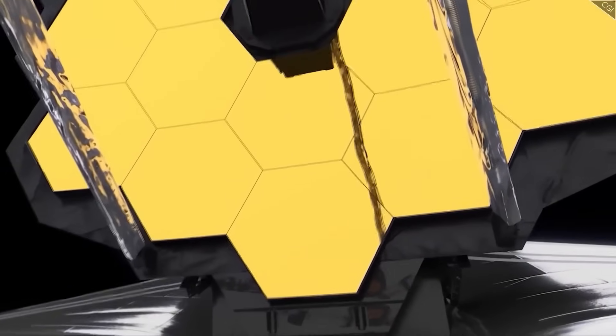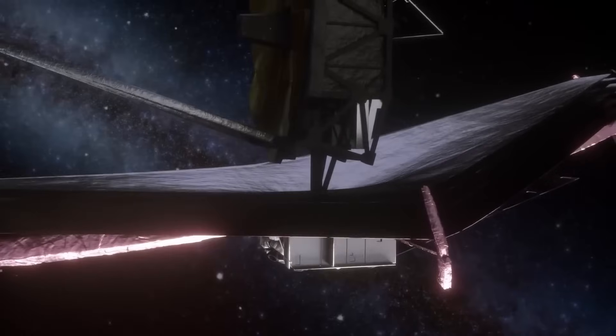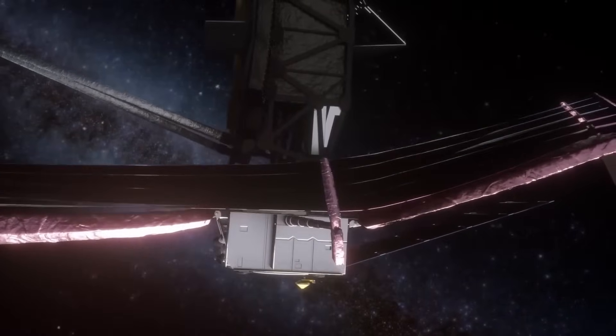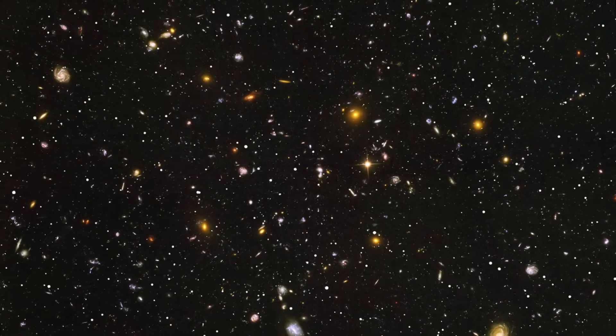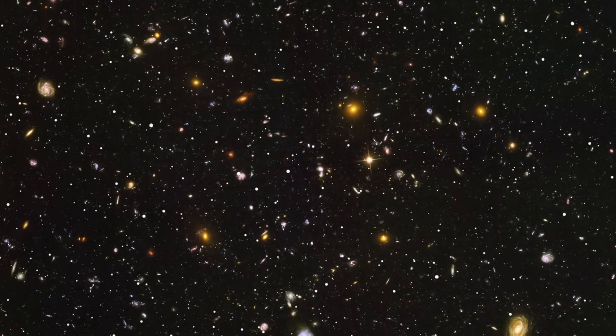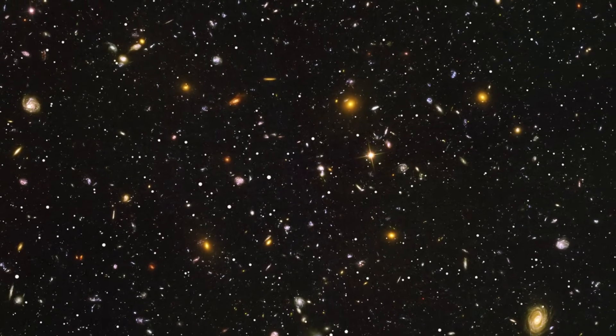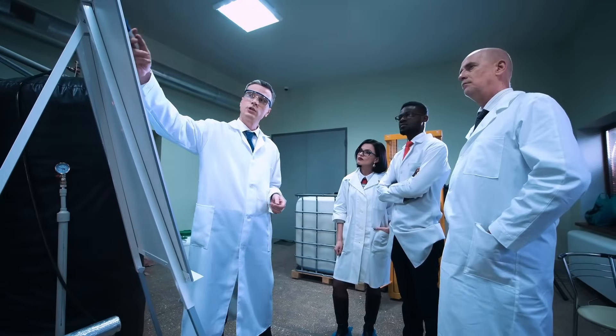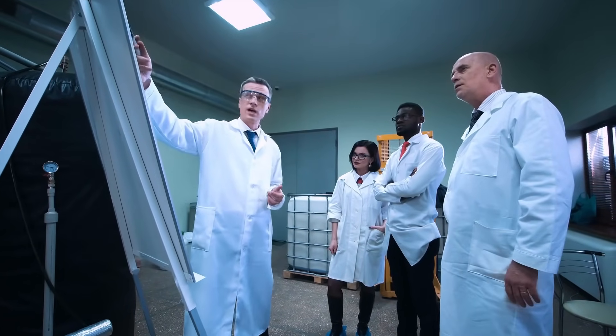The James Webb Space Telescope is NASA's new sky observer and has captured impressive images of stars, galaxies, and planets. But now, something unexpected has been discovered—something so massive it could shake the foundations of everything we know, leaving scientists in shock and questioning if their discovery could lead to the end of times.